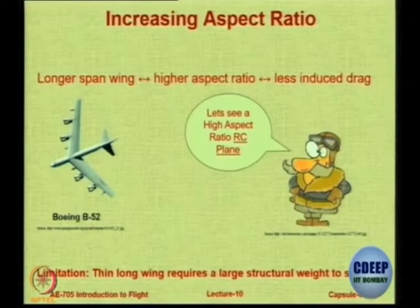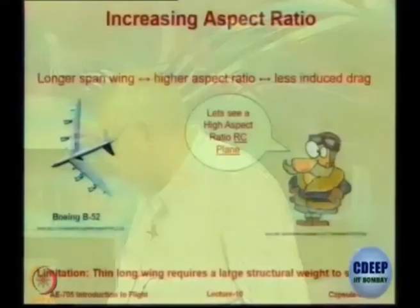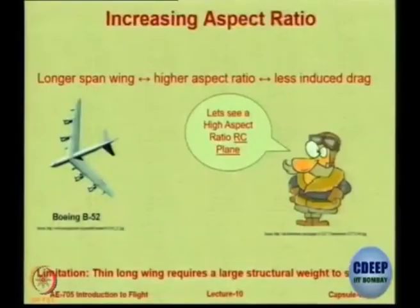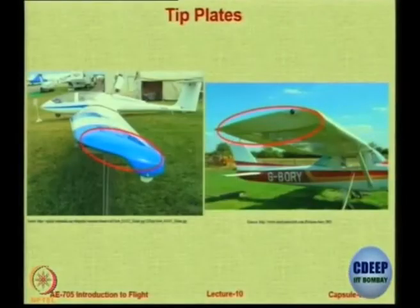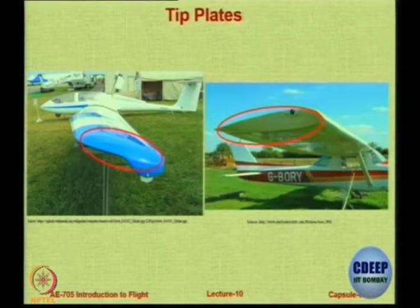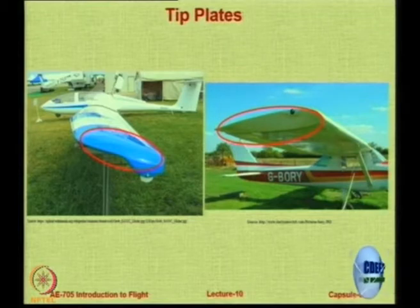But remember that if you make a wing very slender and very thin, then structurally you have to put extra effort to make it stiff and rigid. It does not come at no cost. The other way of induced drag management would be to proactively work on the strength of the vortex.